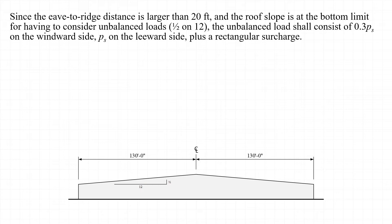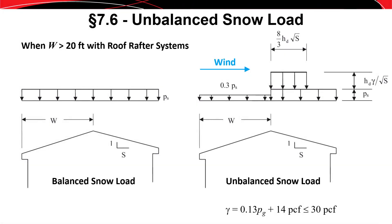Since the distance from the eaves to the ridge of this building is larger than 20 feet and with a roof pitch of half-on-12, we have to consider unbalanced snow loads. When the eave-to-ridge distance W is greater than 20 feet, the unbalanced snow load consists of 30 percent of P sub S on the windward side, and 100 percent of P sub S on the leeward side plus a rectangular-shaped surcharge.